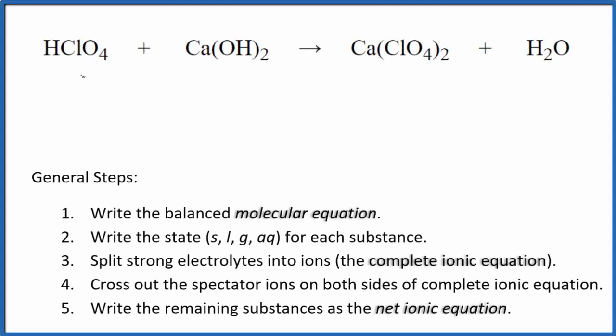Let's write the balanced net ionic equation for HClO4 plus Ca(OH)2. This is perchloric acid. This is calcium hydroxide. So we have an acid and a base. It's a neutralization reaction.